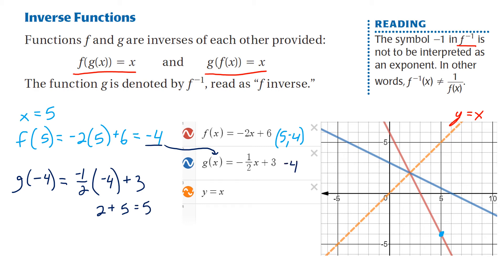So that point is (negative 4, 5), which is right there. And those two points are reflections of each other over y equals x. If you use a ruler, you'll probably get better results, but they're the same distance, they're equidistant from y equals x.